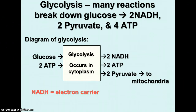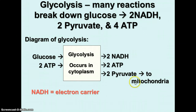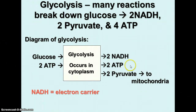Glycolysis occurs in the cytosol. It involves several reactions which break down glucose — that six-carbon molecule — and release 2 NADH to carry some electrons, 2 pyruvates going to the next phase, and 4 molecules of ATP. As a diagram: glucose and 2 ATPs go into the process in the cytoplasm, and the products are 2 NADH going to the electron transport chain, a net of 2 ATPs for the cell to use, and 2 pyruvates that go to the Krebs cycle.